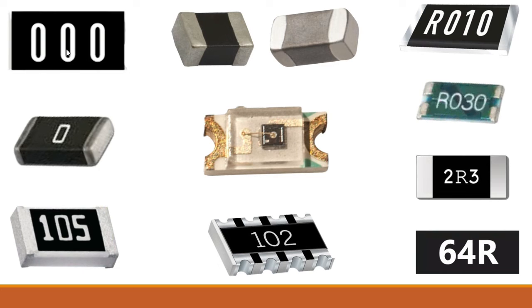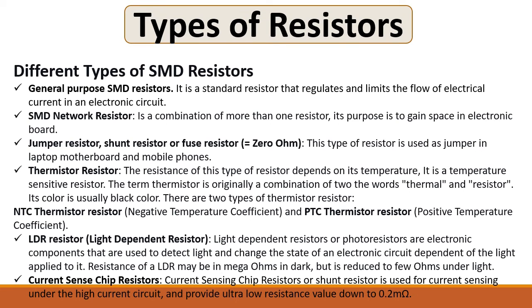This is a jumper resistor or fuse resistor — zero ohms. As you can see, we have triple zero, or here we have one zero — this is a zero ohm resistor. Over here is a standard resistor where the third digit means five zeros, making this a one megaohm resistor.